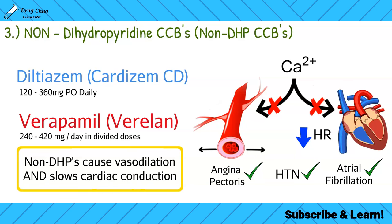Now let's go into adverse effects, which apply to both DHP and non-DHP calcium channel blockers. The first side effect is dose-dependent peripheral edema — the accumulation of fluid in the limbs, commonly seen in the legs. This is believed to occur because vasodilation causes blood vessels to become leaky; fluid leaks out and gravity pulls it down toward the feet.